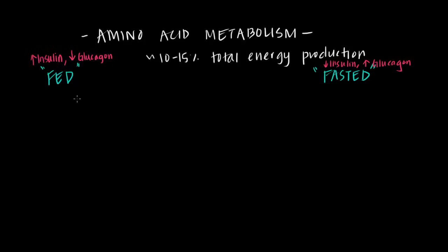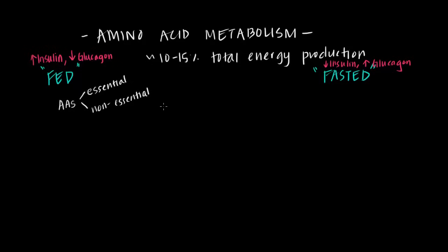Starting with the fed state, recall that we ingest proteins from our food, and those proteins are broken down into amino acids inside of our small intestine. As a side note, you might hear the terms essential and non-essential amino acids — essential amino acids are those of the 20 that our body cannot synthesize, so we must get them in our diet, whereas non-essential amino acids can be synthesized in our body and are not required from diet.